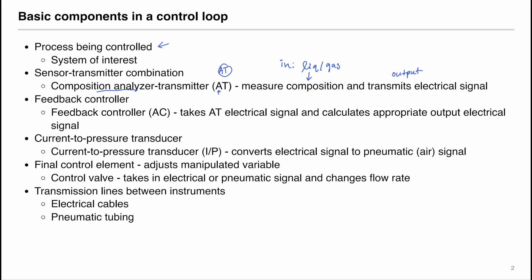Then we will have a feedback controller, which we usually denote as AC, where A is analysis and C is controller. The feedback controller takes the electrical signal from the composition analyzer transmitter and calculates an appropriate output electrical signal. How it calculates that output will be the subject of this and other video recordings.